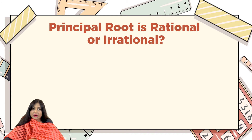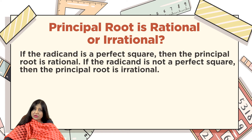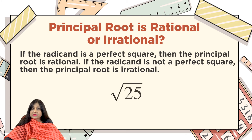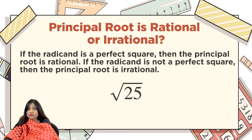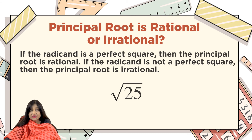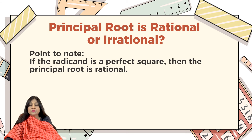If the radicand is a perfect square, then the principal root is rational. If the radicand is not a perfect square, then the principal root is irrational. For example, the square root of 25 is 5 or −5, and the principal root is 5. Since 25 is a perfect square, the principal root is rational.